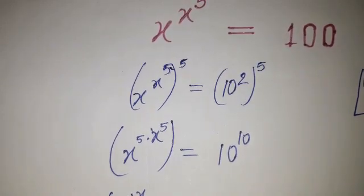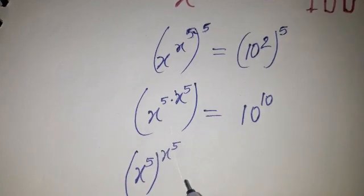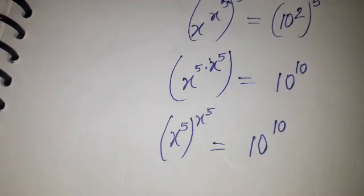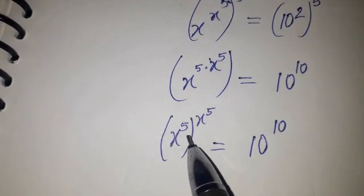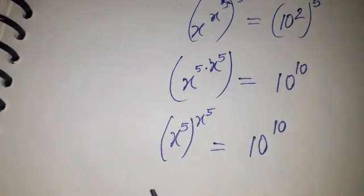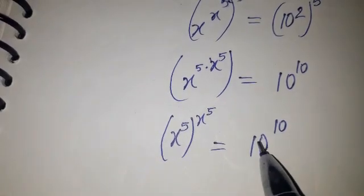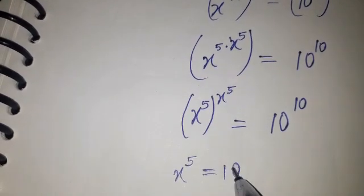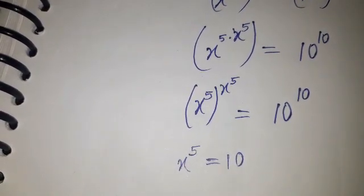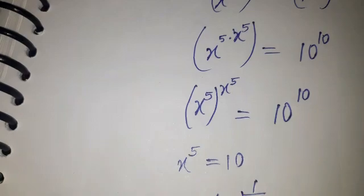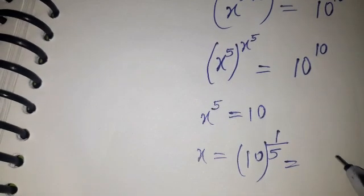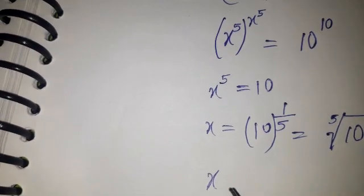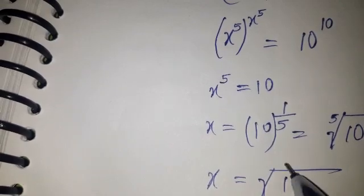So here x to the power 5, that is equal to 10. So I can write x is equal to 10, and this power will come here 1 by 5, so it will become root under 5 and then 10. So this is the value for x: x is equal to the fifth root of 10.